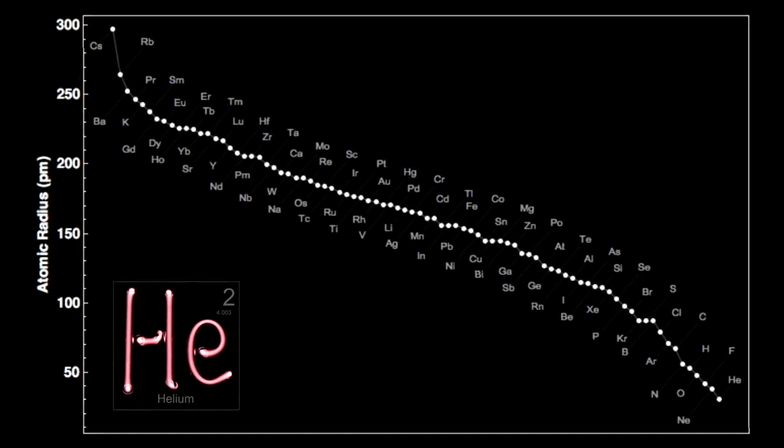Here are atom sizes sorted from largest, cesium on the top left, to smallest, helium on the bottom right. Helium has the smallest size atom of all the elements.